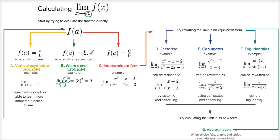Now let's think about the other scenarios. What happens if you evaluate the function and you get some number divided by zero? Well, in that case you are probably dealing with a vertical asymptote.